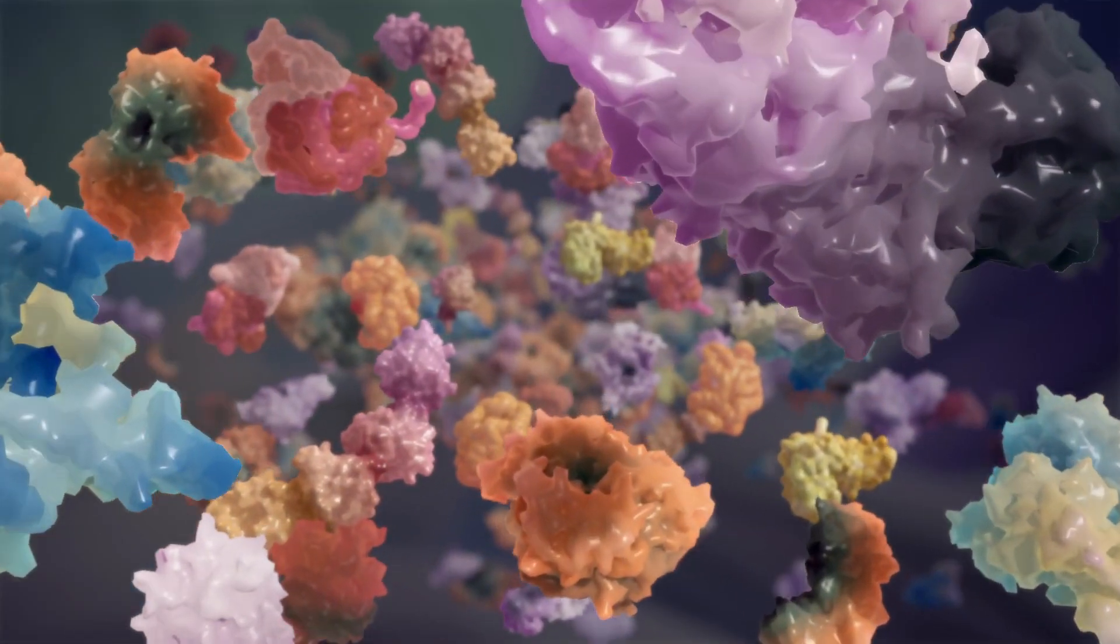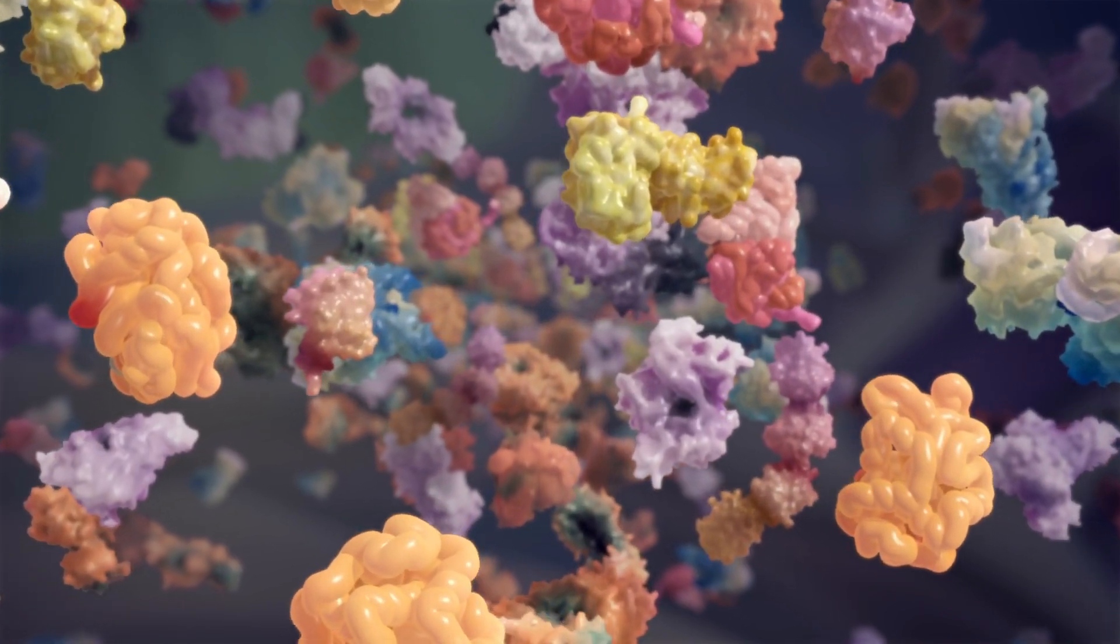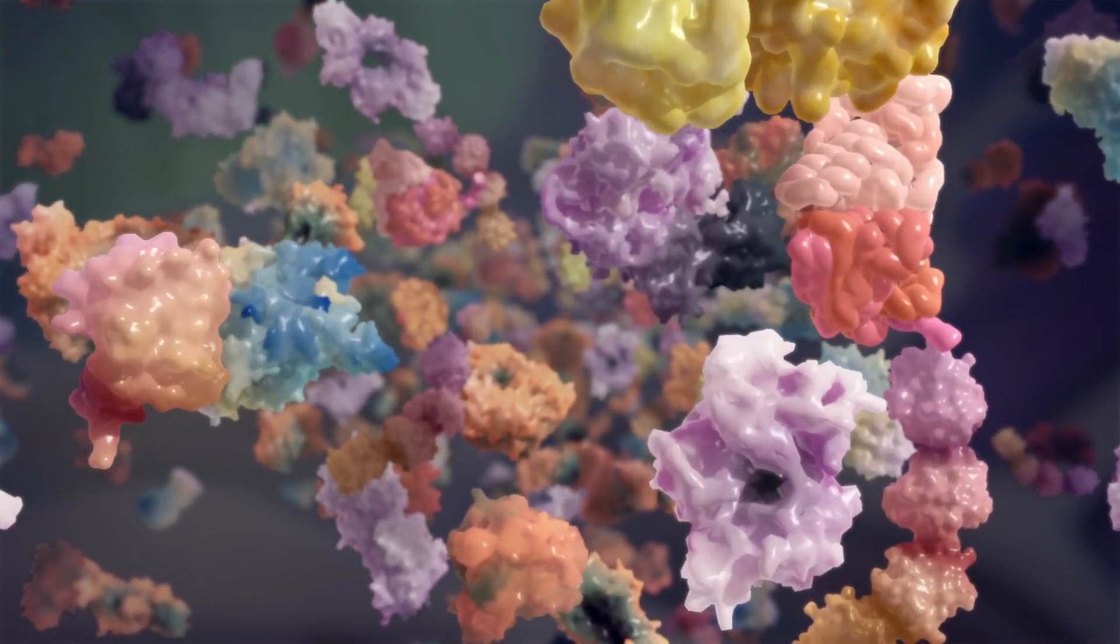More than 30 different proteins are known to misfold and form amyloid, meaning that over 30 different types of amyloidosis exist.